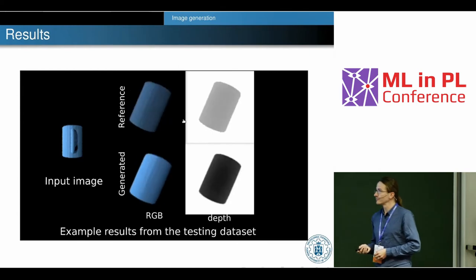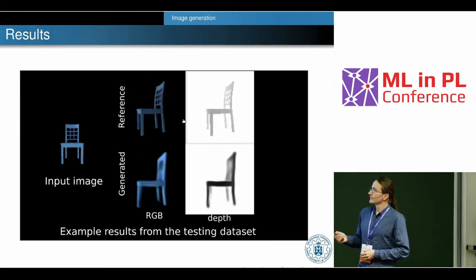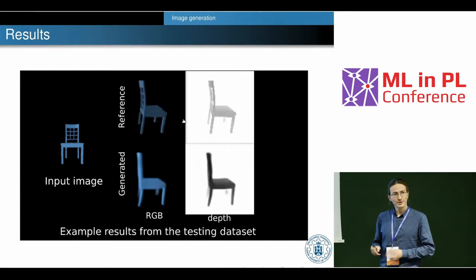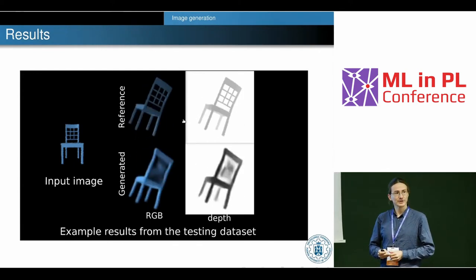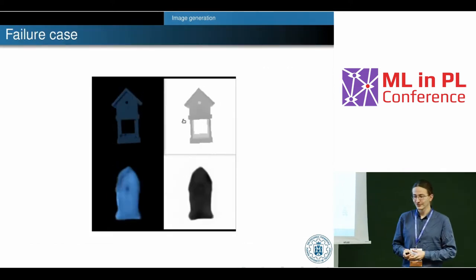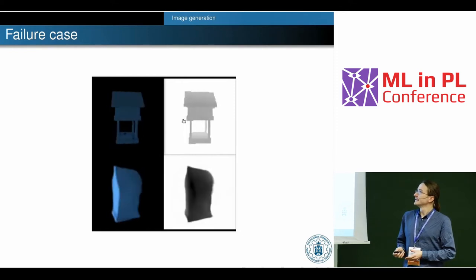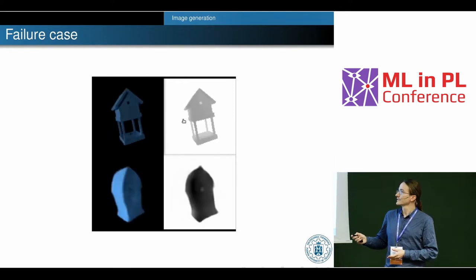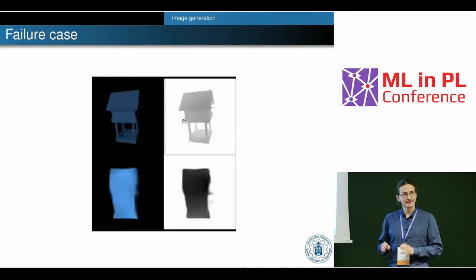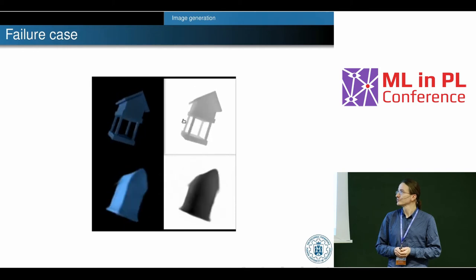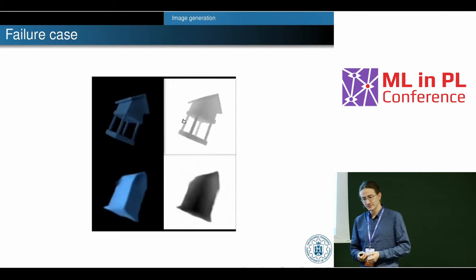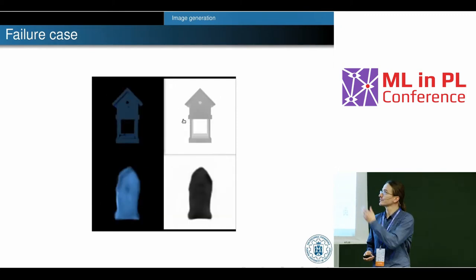Here you can see some problems. This is data generated by our neural network — we miss some information about the details. But we are still happy with the results. There are also some failure cases: this is the reference image and this is the output from our network. Some details are missed on the output. This is a problem with the dataset — we don't have enough objects to generalize for this type of object.